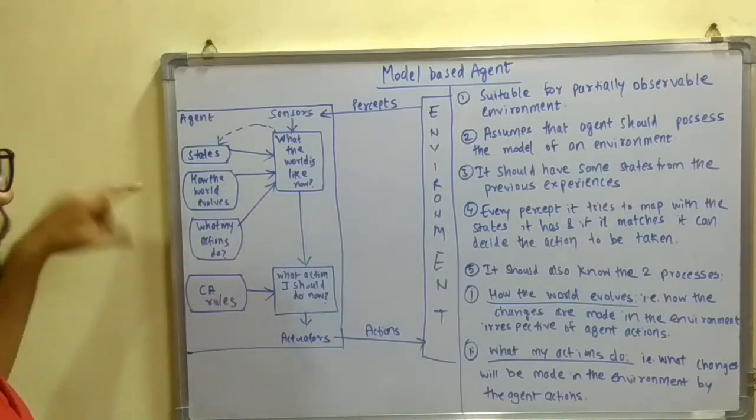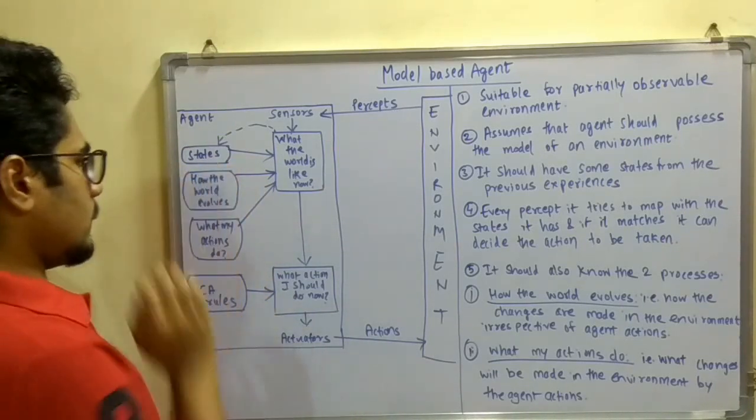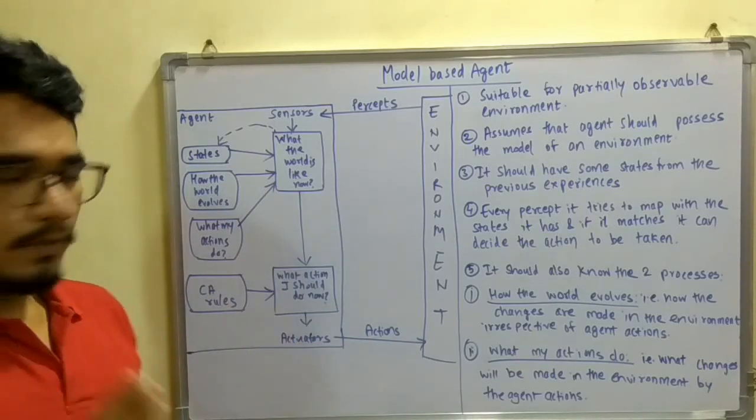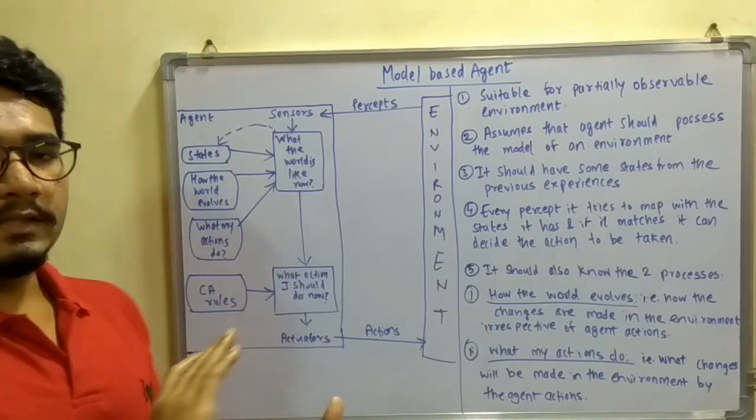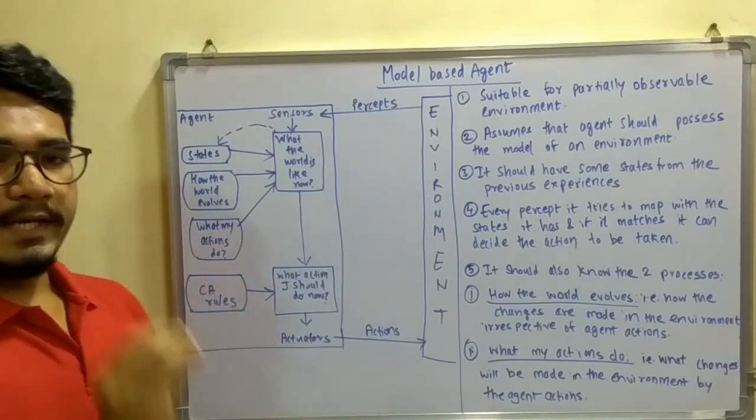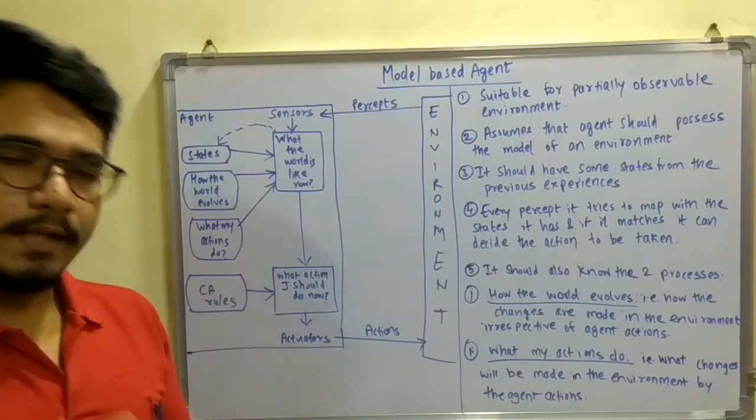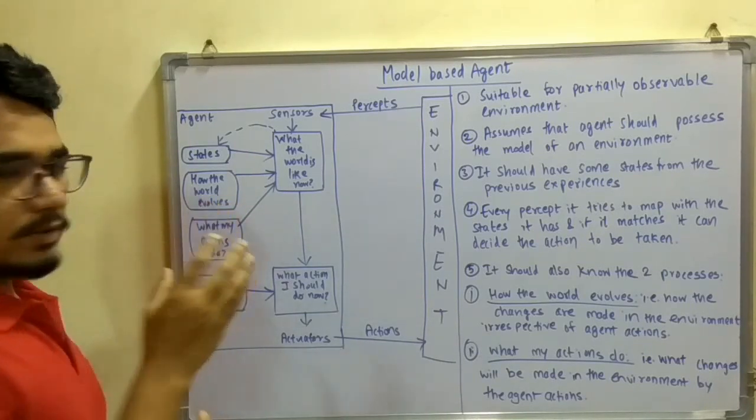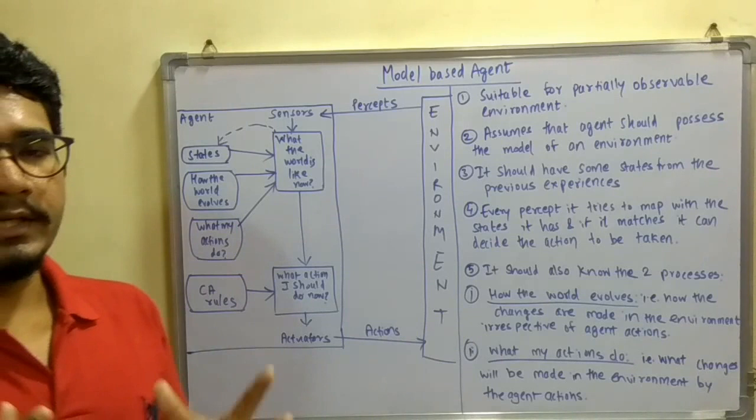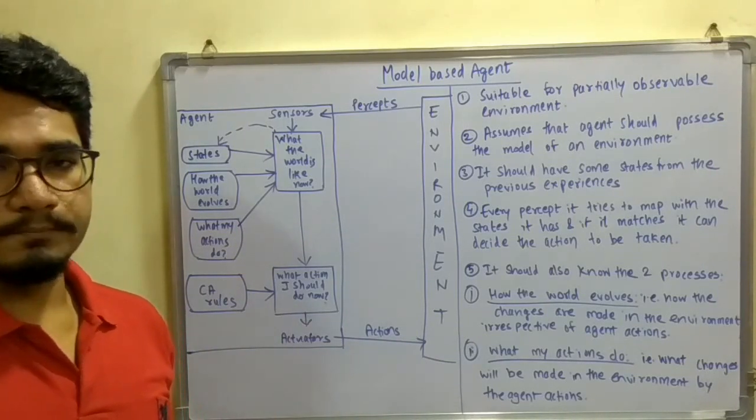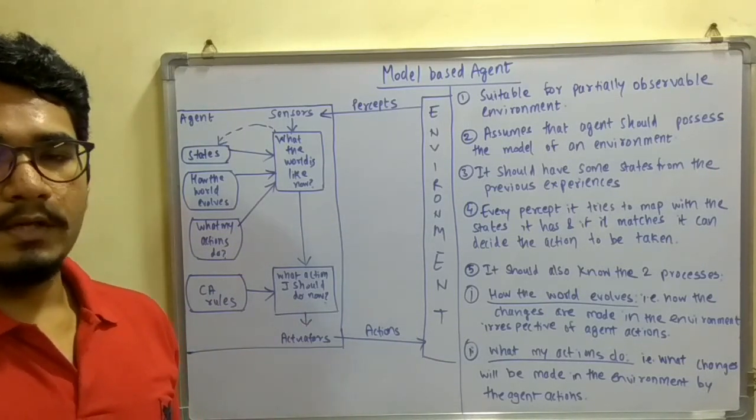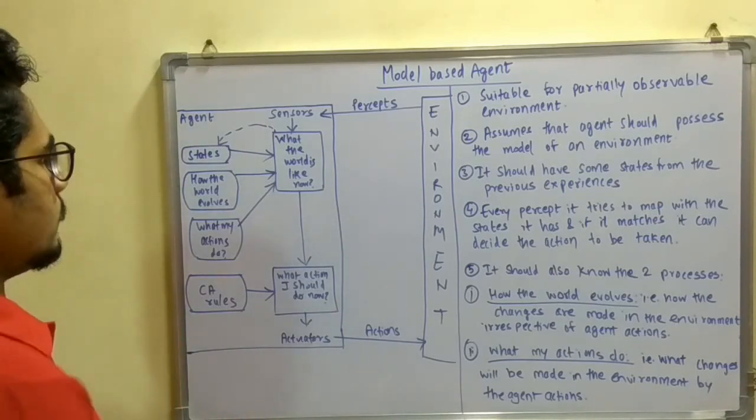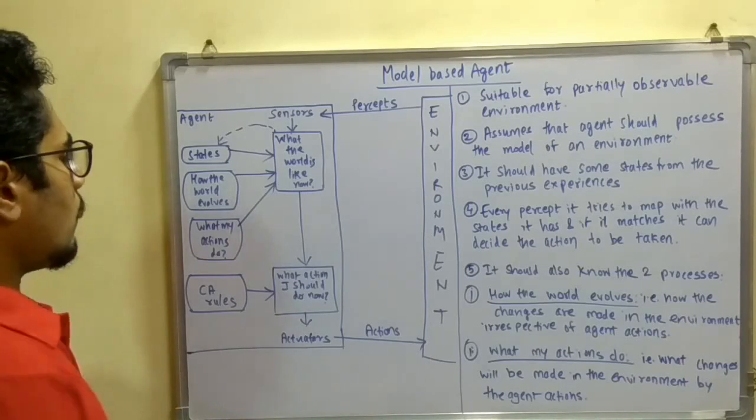How the world evolves basically stresses that the environment changes every now and then. Now if the agent does not act upon it, then also it will change. So the agent should have that knowledge, like the environment which was at 10 PM would not be the same at 12 PM, so it updates automatically. That knowledge it should have also.